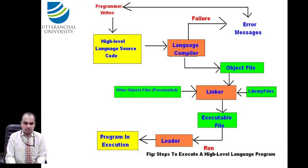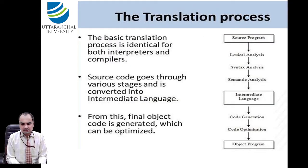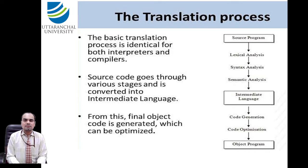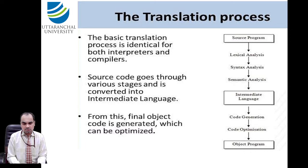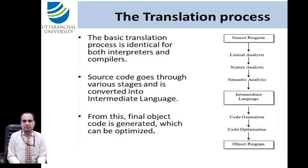The translation process follows three phases: source program, intermediate language, and object program. The basic translation process is identical for both interpreter and compiler. Source code goes through various stages and is converted into intermediate language, and from this, the final object code is generated, which can be optimized. The object file is generated through the loader and linker.